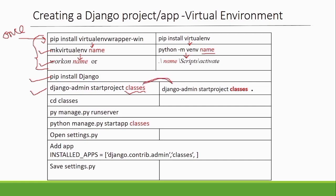There are two ways to create a project, independent of which virtual environment method you use. You can use `django-admin startproject projectname` or `django-admin startproject projectname .` with a space and dot. The only difference is the directory structure, which I have explained in the previous lecture and will demonstrate in this video as well. If you created with the first command, you navigate inside the folder with `cd projectname`; with the second command, you stay where you are.